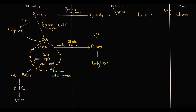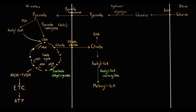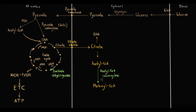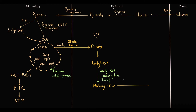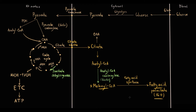In fatty acid synthesis, acetyl-CoA is first carboxylated by acetyl-CoA carboxylase to malonyl-CoA. Acetyl-CoA carboxylase is the most important rate-limiting enzyme in fatty acid synthesis, and its coenzyme is biotin. From multiple malonyl-CoA molecules, fatty acid synthase produces the saturated 16-carbon fatty acid palmitate — saturated meaning it has no double bonds. This condensation requires a large amount of NADPH molecules.